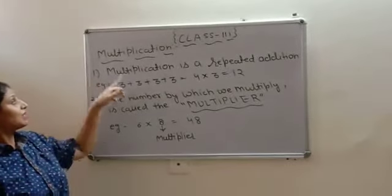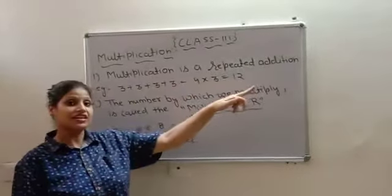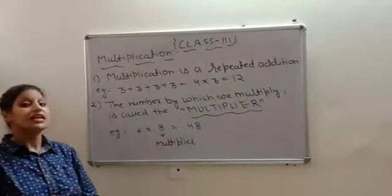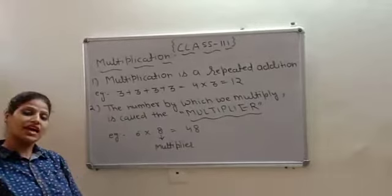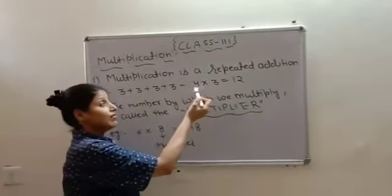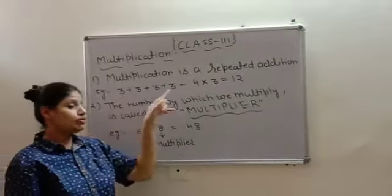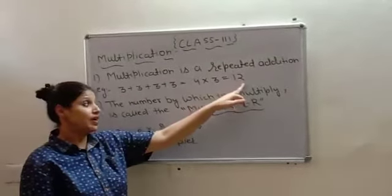First is, multiplication is a repeated addition. For example, if 3 is repeating 4 times, instead of adding 3 four times, what you will do? Directly, 4 threes are 12. So, after adding all 3 four times, you will get 12. Alright.